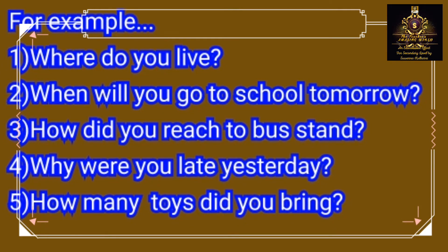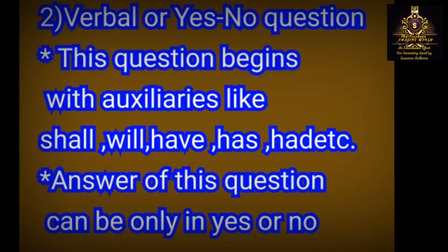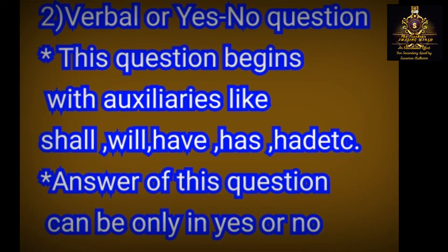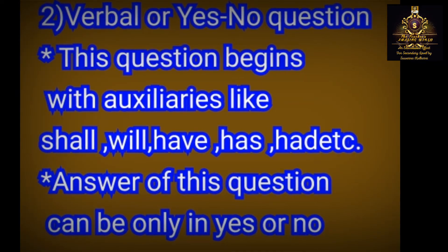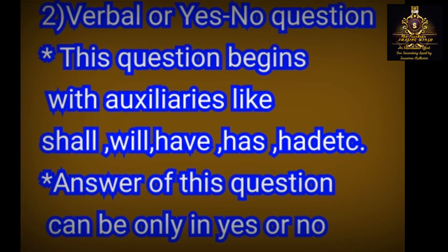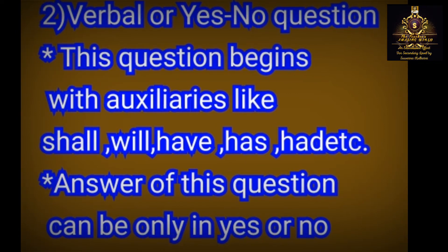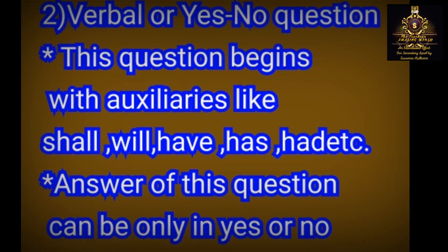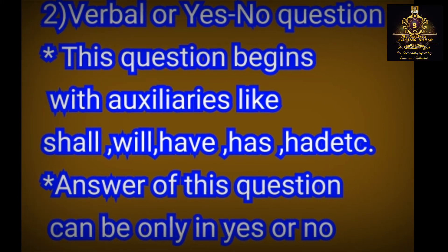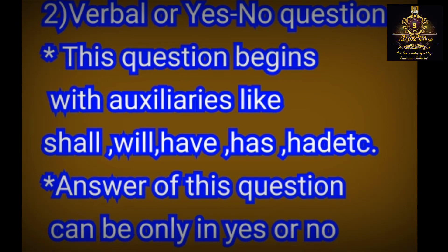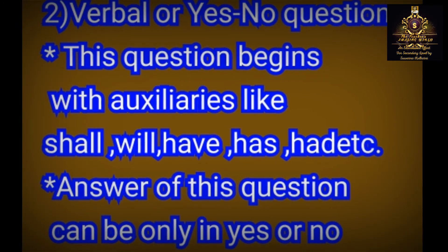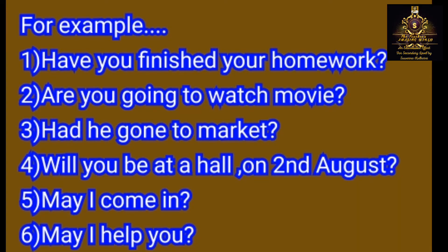How many toys did you bring? The second type is verbal or yes-no questions. This type of question begins with auxiliaries like shall, will, have, has, had, is. The answer to this type of question can only be yes or no.